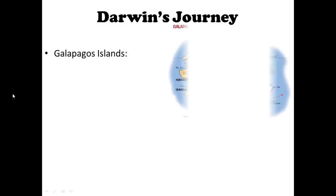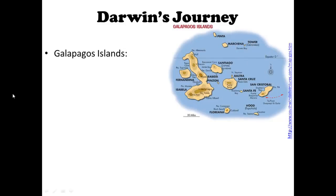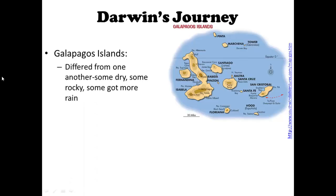The Galapagos Islands — here's a closer image of the islands. There are about five larger islands and then some smaller ones around them. Each of these islands differed from one another. Some of the islands were drier, maybe more like deserts. Some were rocky. And some got more rainfall, so they were more moist or wetter than others.